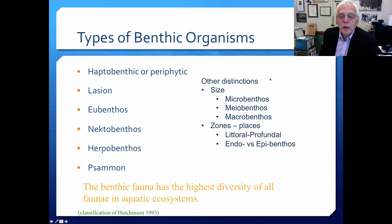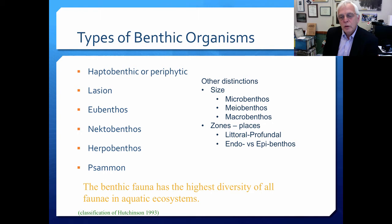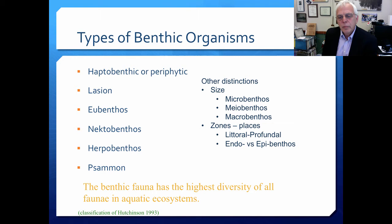There are different types of benthic organisms and various distinctions made in the benthos. One distinction is size, with three main categories: microbenthos, meiobenthos, and macrobenthos. Micro and macro are self-explanatory — the little ones and the big ones. Things like freshwater mussels and crayfish are macrobenthic organisms. Microbenthic are things you don't see very well, like protozoans and some small crustaceans. The meiobenthos are those in the middle; examples would be caddisflies and chironomids.